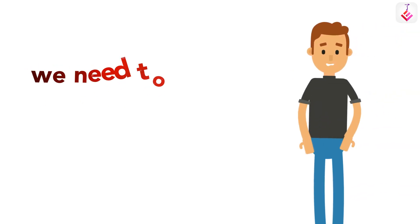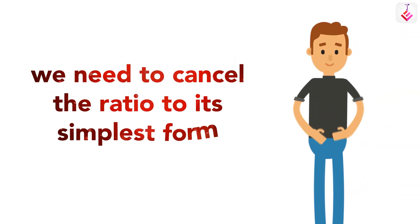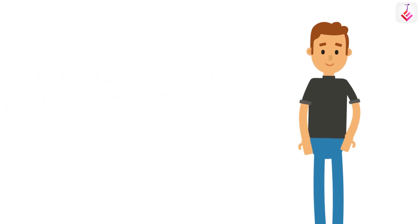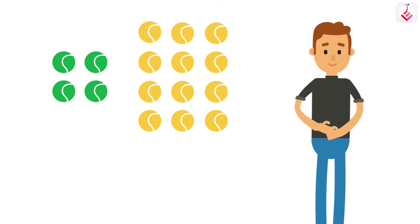From our last video, we got to know that we need to cancel the ratio to its simplest form, like fractions, by a common factor. Suppose you have four green balls and twelve yellow balls. What is the ratio of green to yellow balls?